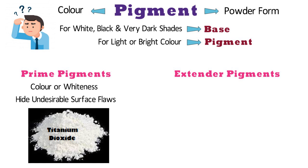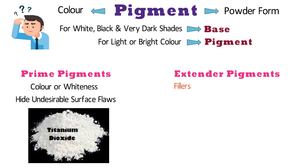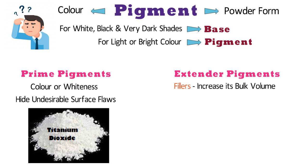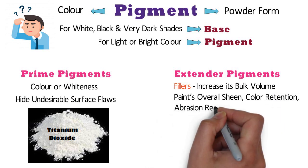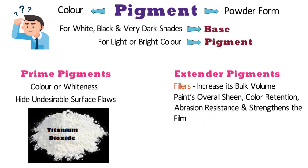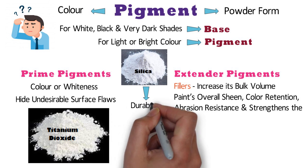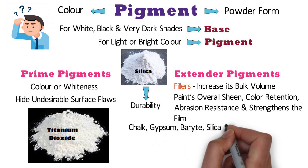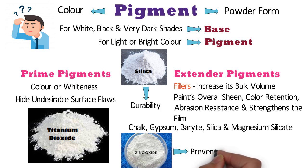Extender pigments are also called fillers. A filler is a substance which can be added to paints to increase its bulk volume without affecting its useful properties. It influences the paint's overall sheen, color retention, abrasion resistance, and strengthens the film. For example, silica and silicates are extender pigments that increase the paint's durability. Commonly used extenders are chalk, gypsum, barite, silica, and magnesium silicate. Zinc oxide helps to prevent mildew and corrosion and is especially useful in outdoor applications.